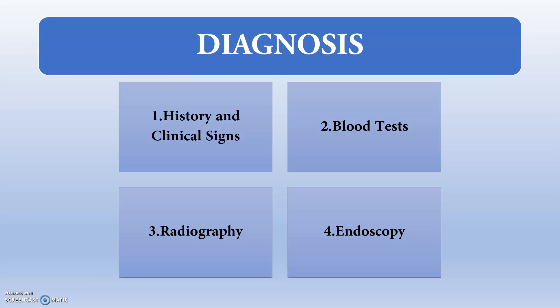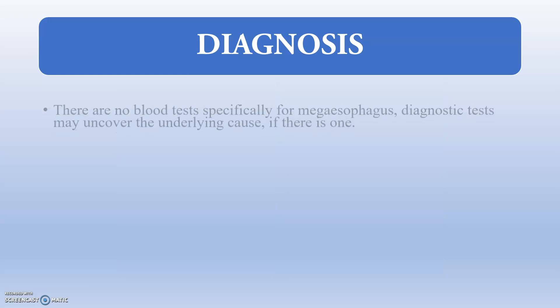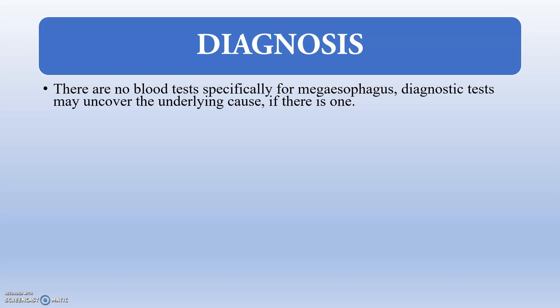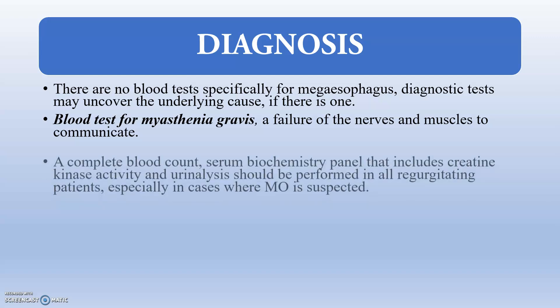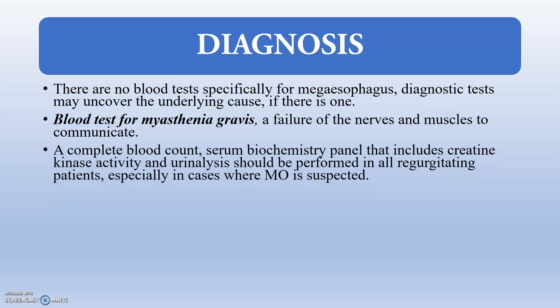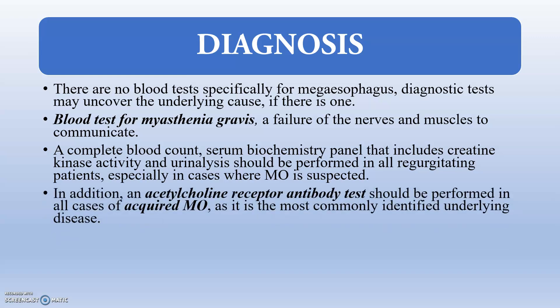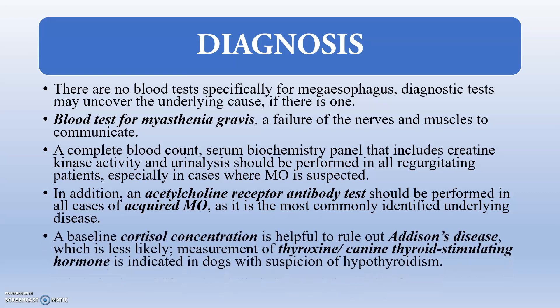Diagnosis involves history, clinical signs, breed history, blood tests, radiography, and endoscopy. There is no standard blood test specifically for megaesophagus, but a blood test for myasthenia gravis — a failure of nerves and muscles to communicate — can be done, as an animal with myasthenia gravis can have megaesophagus. A complete blood count, serum biochemistry panel including creatine kinase activity, and urinalysis should be performed in all regurgitating patients. An acetylcholine receptor antibody test can be done for acquired myasthenia gravis, the most commonly identified underlying disease.